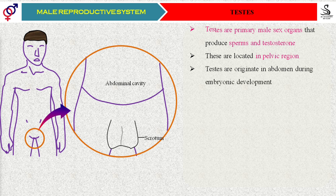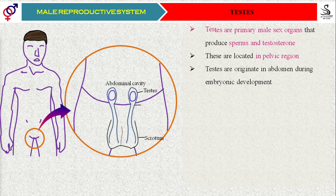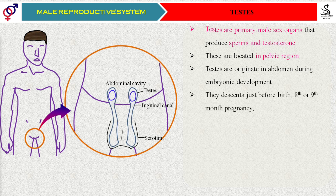Both testes, during embryonic development, originate in the abdominal cavity. After once they get originated, they will keep on developing there, and just before parturition — just before the delivery, during the eighth or ninth month — they are going to descend into the scrotum.